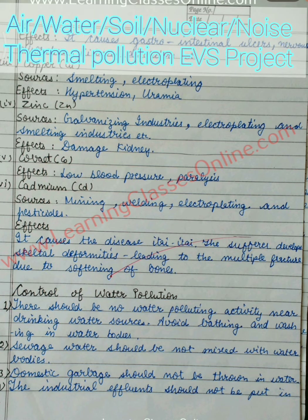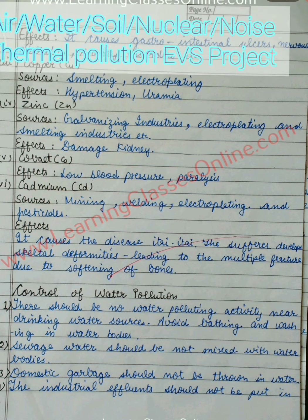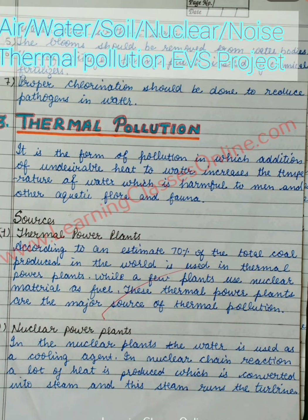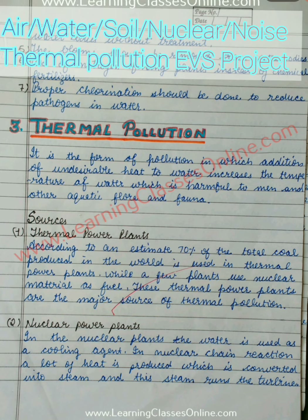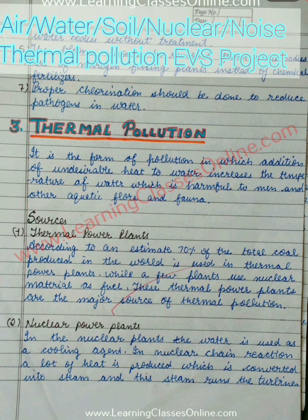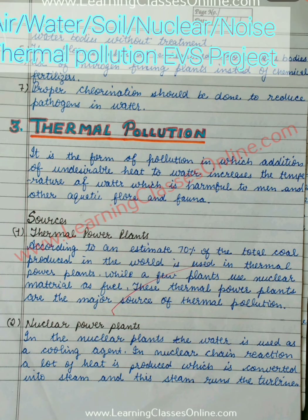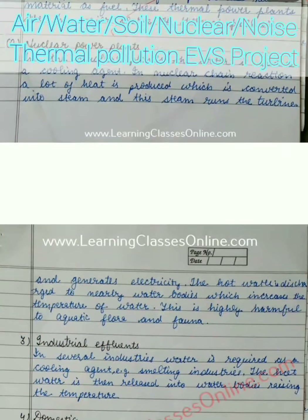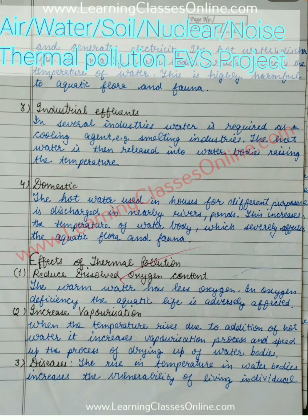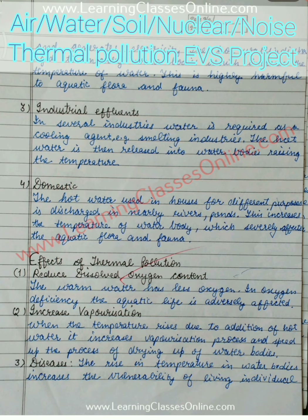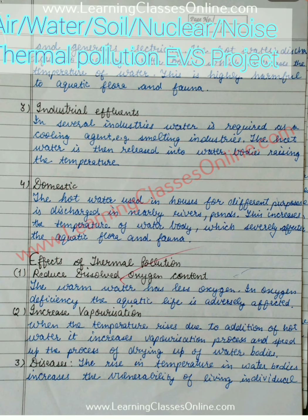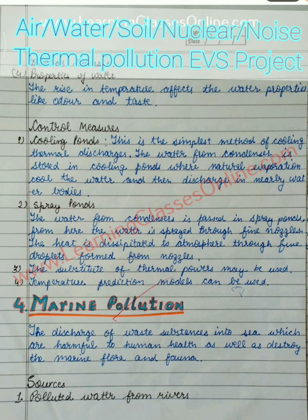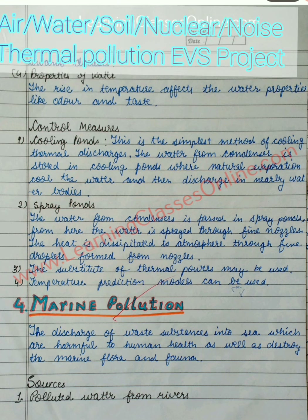Control measures — how you can control water pollution — are also included. After that, next is thermal pollution. If you have a topic based on thermal pollution, you can start with this. These are all the thermal pollution influences, the effects of thermal pollution are given here, and the different control measures are also given in this data.